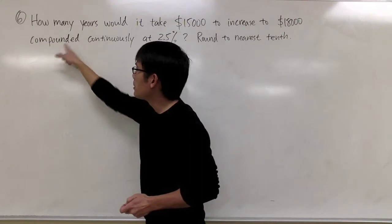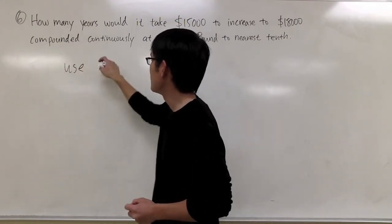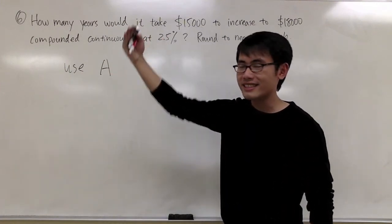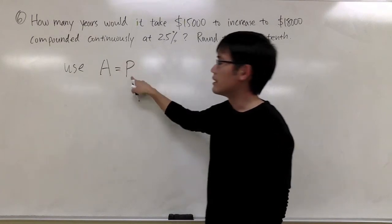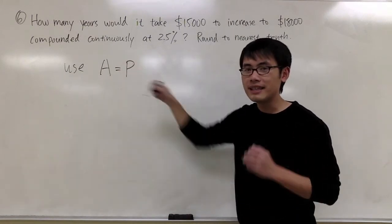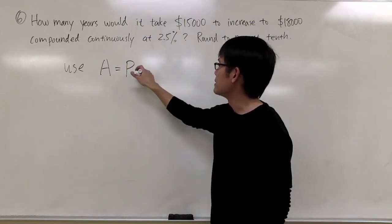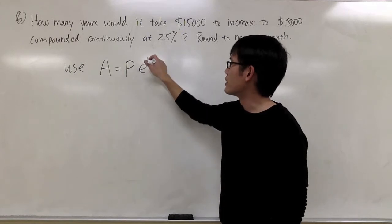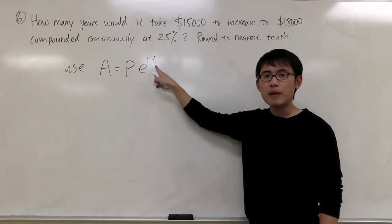Because it said compounding continuously, you should use the formula A = Pe^(rt). A stands for the amount that you want to get. P stands for the principal, that means how much money you have right now, the current amount, times e, the special number e on your calculator, raised to the rt power. R stands for the rate, and t is how many years.